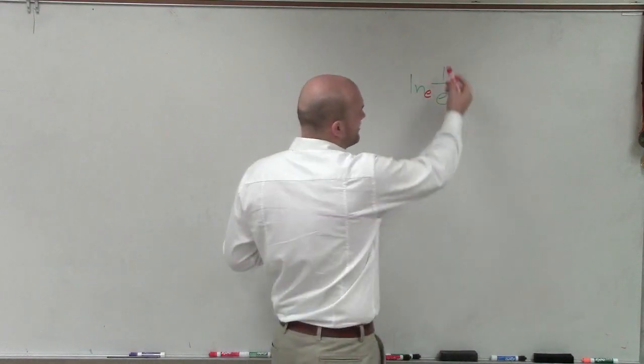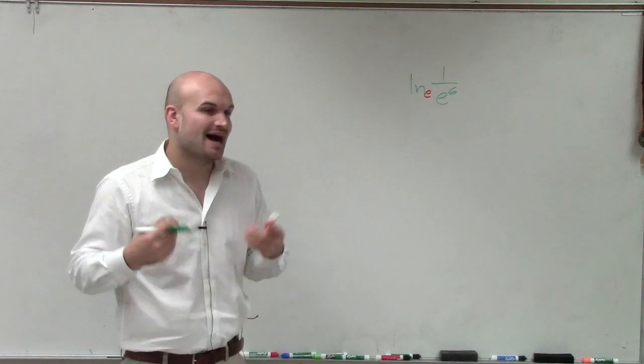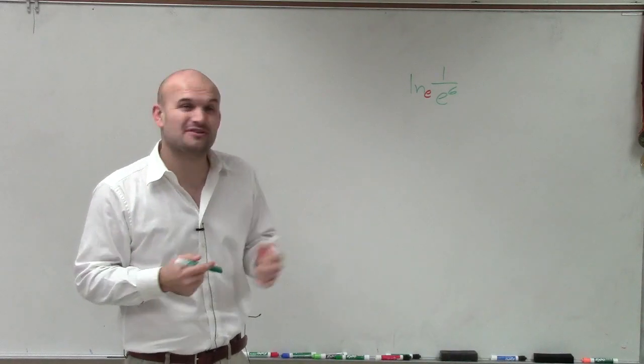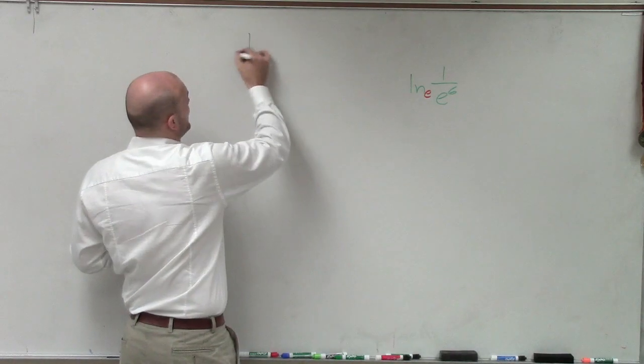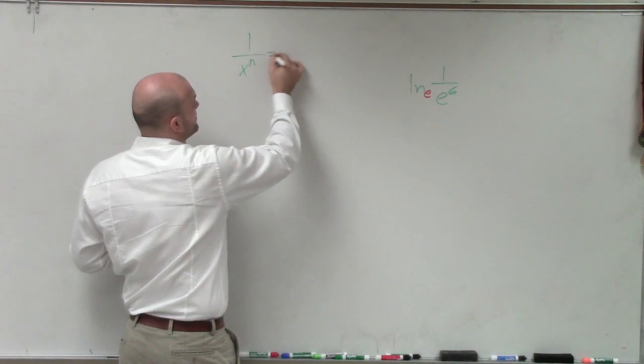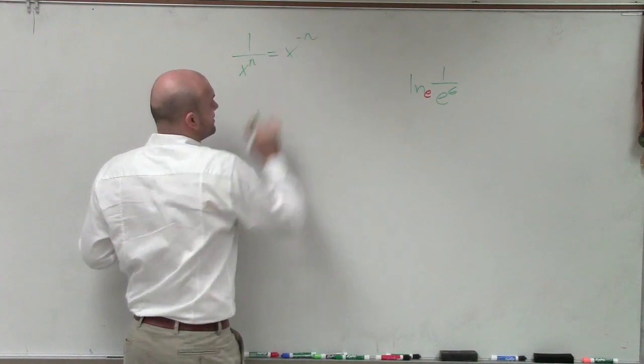The next thing I want to do is I don't really want to write this as a fraction. I want to rewrite this with an integer, even if I have to use negative exponents. So remember, if I have 1 over x to the n, I can rewrite that as x to the negative n.